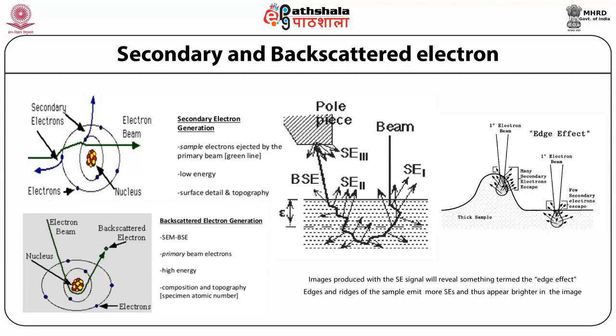Secondary electrons are generated by three different mechanisms: SE1, SE2, and SE3. SE1 secondary electrons are produced by interaction of electrons from the incident beam with specimen atoms, generated in close proximity to the incident beam and thus representing a high lateral resolution signal. SE2 are produced by interaction of high-energy backscattered electrons with specimen atoms, carrying both lateral and depth distribution characteristics of the backscattered electrons. SE3 are produced by high-energy backscattered electrons that strike the pole pieces and other solid objects within the specimen chamber.